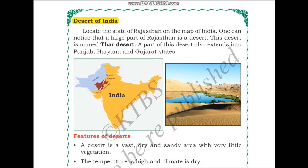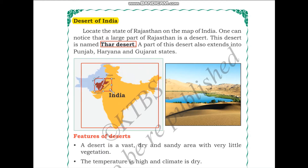Locate the state of Rajasthan on a map of India. One can notice that a large part of Rajasthan is a desert. This desert is named Thar Desert. As we can see, the major part of Rajasthan is the Thar Desert. A part of this desert also extends into Punjab, Haryana and Gujarat states.